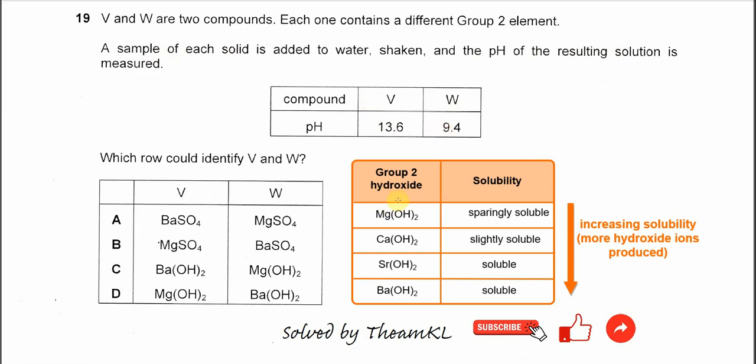So now we are quite sure V and W cannot be sulfate because the pH is more than 7, it's alkaline solution. So A and B are not the answer. It must be something with hydroxide.